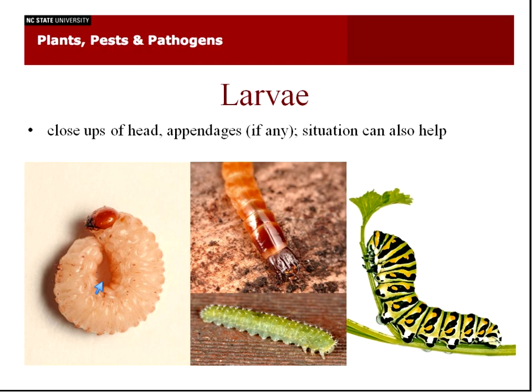For larvae, you want to get close-ups of the heads and appendages, if any — whether it has appendages. For example, this weevil has no appendages, whereas this caterpillar has true thoracic legs and these prolegs — fleshy legs on the back. Those are very important. Also, the situation where you found it: was it under some bark, was it on some parsley like this black swallowtail larva? Things like that can actually really help, because certain larvae live in certain situations.